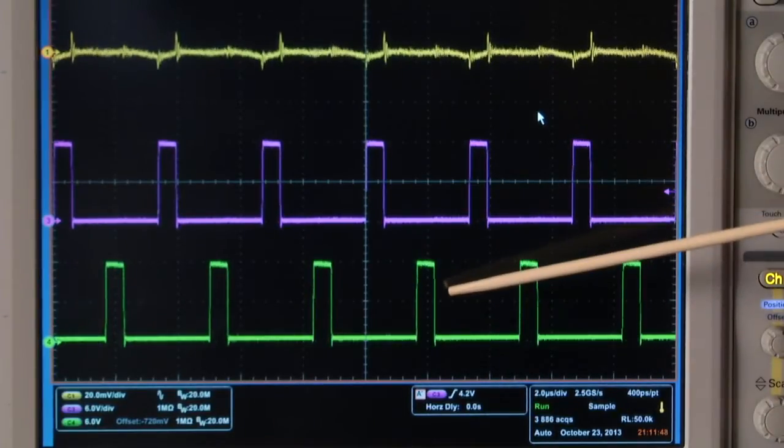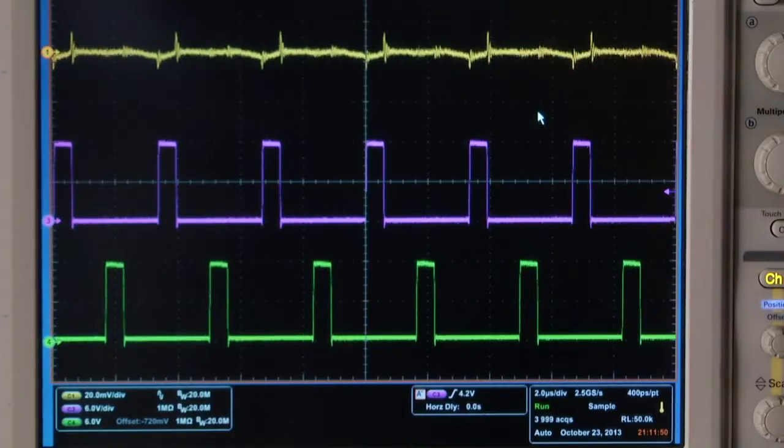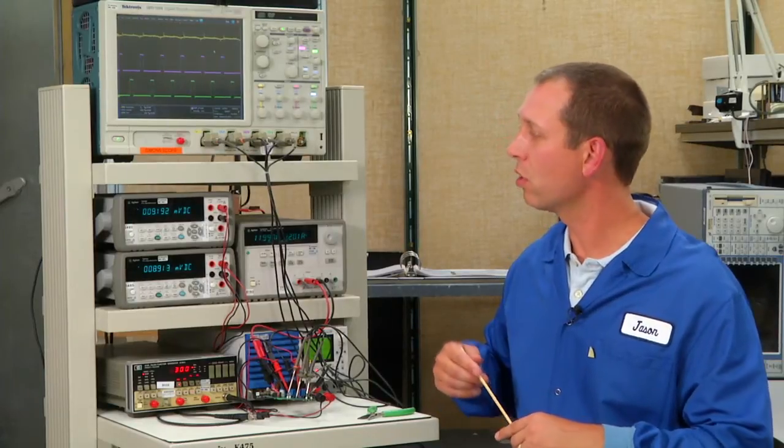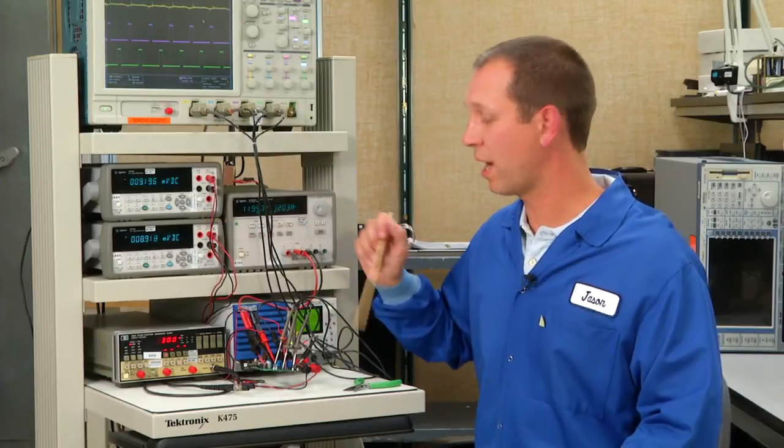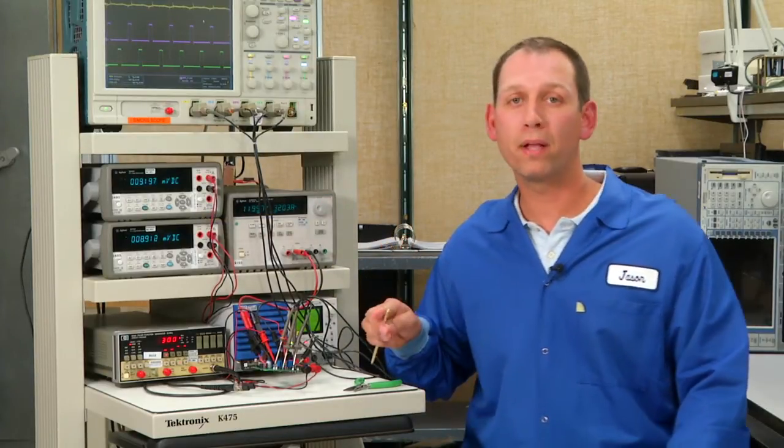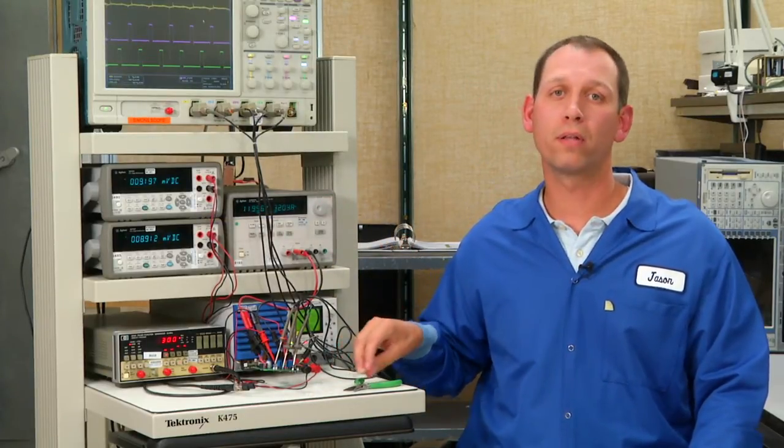As I mentioned before, we're monitoring the output current with the digital multimeters here. Both of the output currents are very close to one another, which is a good thing when we're trying to current balance. Current balancing is important when paralleling multiple devices because we don't want one device doing more work than the other, which will cause it to overheat or go into over current condition.